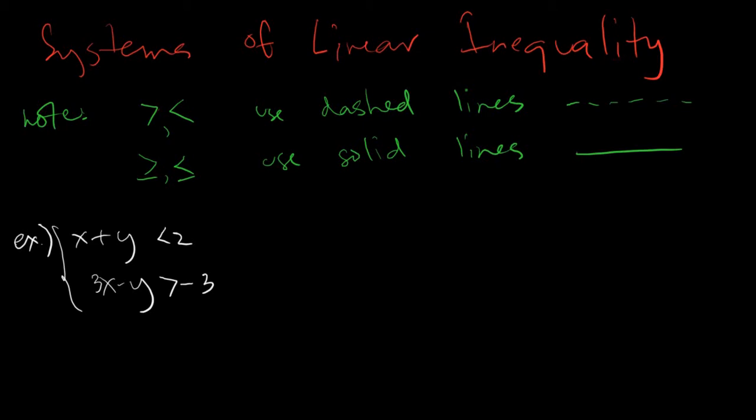So just a side note: for greater than or less than, we will use dashed lines. These dashed lines indicate that the solution is not part of the line, just like what we do when it comes to solving linear inequalities — we use dashed lines or solid lines. For greater than or equal and less than or equal, we will use solid lines.